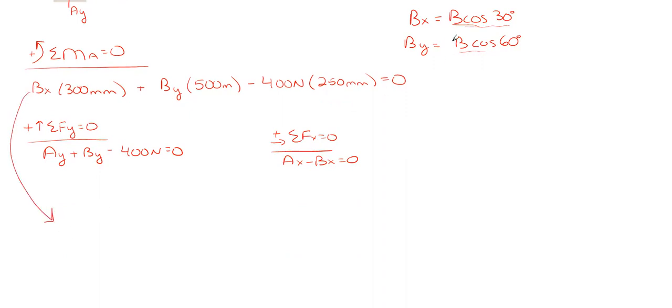So rewriting the moment equation here, substituting in B sub x and B sub y for B cosine 30, B cosine 60, we end up with B cosine of 30 for B sub x multiplied by 300 millimeters, plus B sub y, which is B cosine of 60, times 500 millimeters. And then I'm just going to go ahead and I'm going to take the 400 times the 250 and take it to the other side of the equation, which is 100,000.